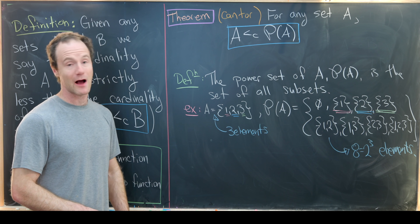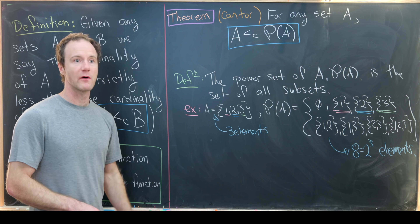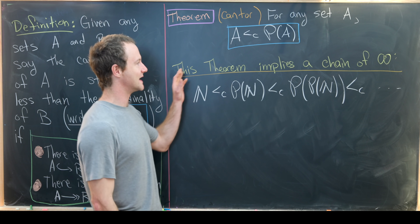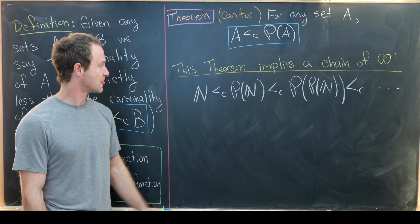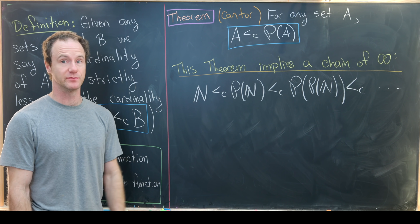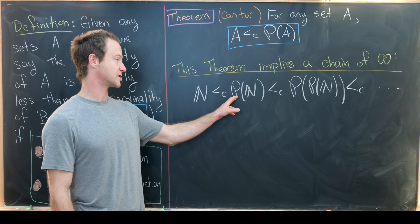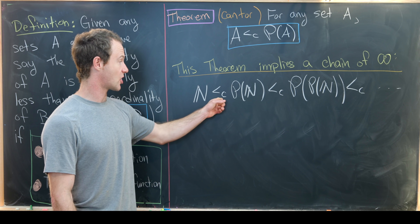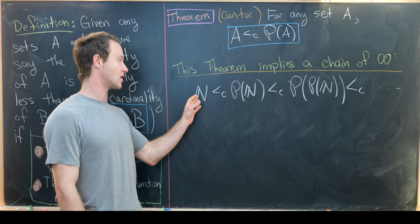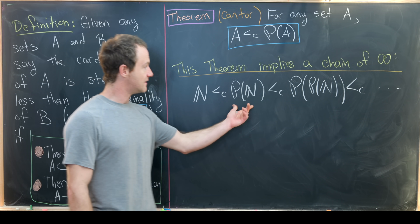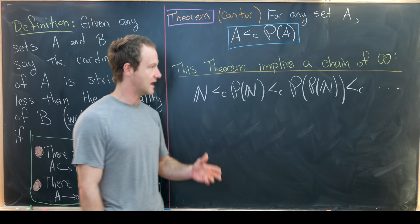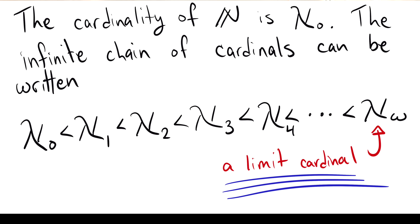Before we look at the proof, I want to highlight an implication. One of the most interesting things about this theorem is that it implies the following chain of infinities. We could start at the natural numbers — the countable infinity — apply the power set to get a strictly larger infinity, apply the power set again to get yet another larger infinity, and so on. We'll always get sets of larger cardinality.